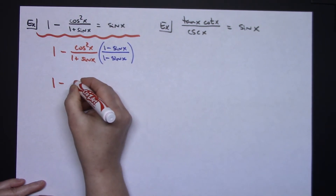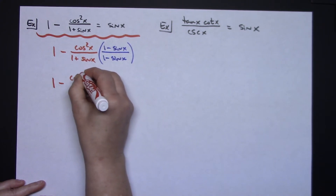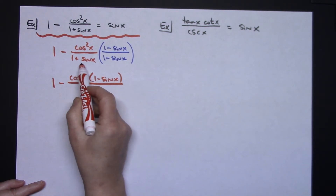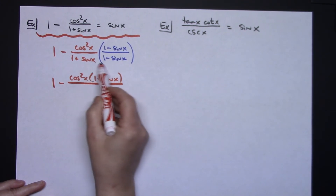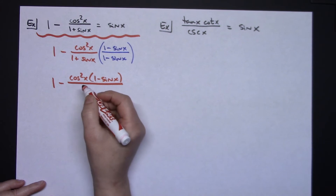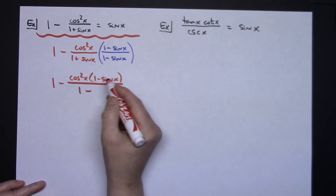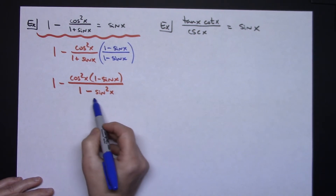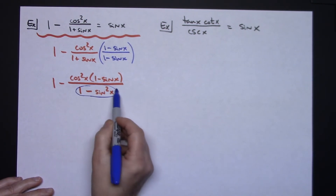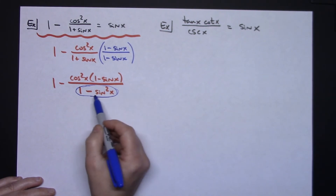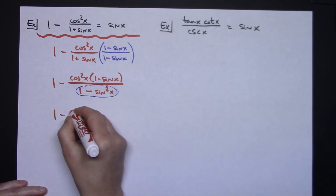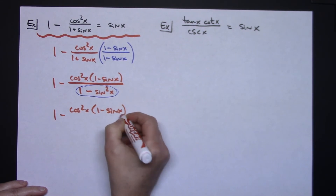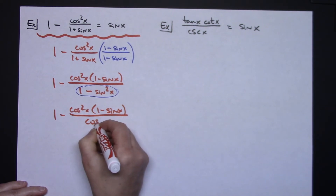I'm going to leave the numerator as cosine squared x times 1 minus sine x for now. On the bottom, multiplying by the conjugate uses the difference of squares pattern: 1 squared minus sine squared x. And again, 1 minus sine squared x is that common Pythagorean identity — it equals cosine squared x. So I have cosine squared x times (1 minus sine x) all over cosine squared x.